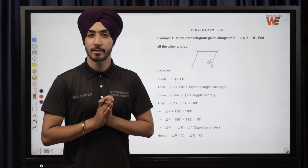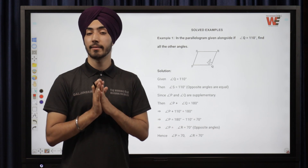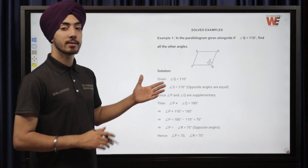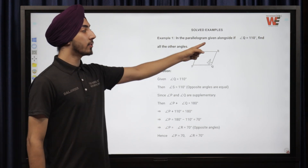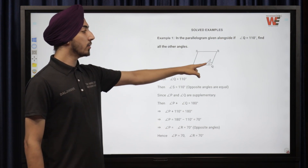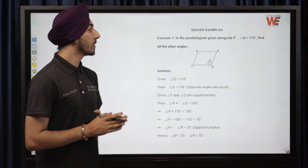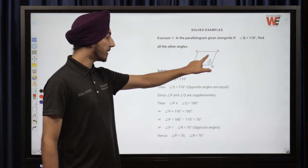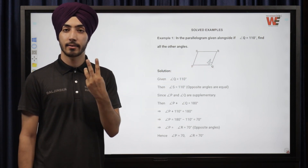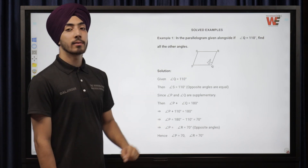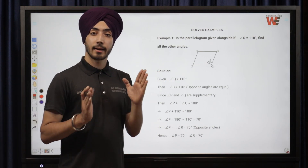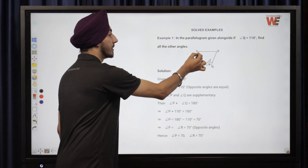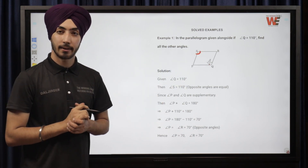Now let's attempt some questions. In the parallelogram given alongside, angle Q equals 110 degrees — find the measure of all the other angles: R, S, and P. Since opposite angles in a parallelogram are equal, angle S, which is opposite to angle Q, is also 110 degrees.